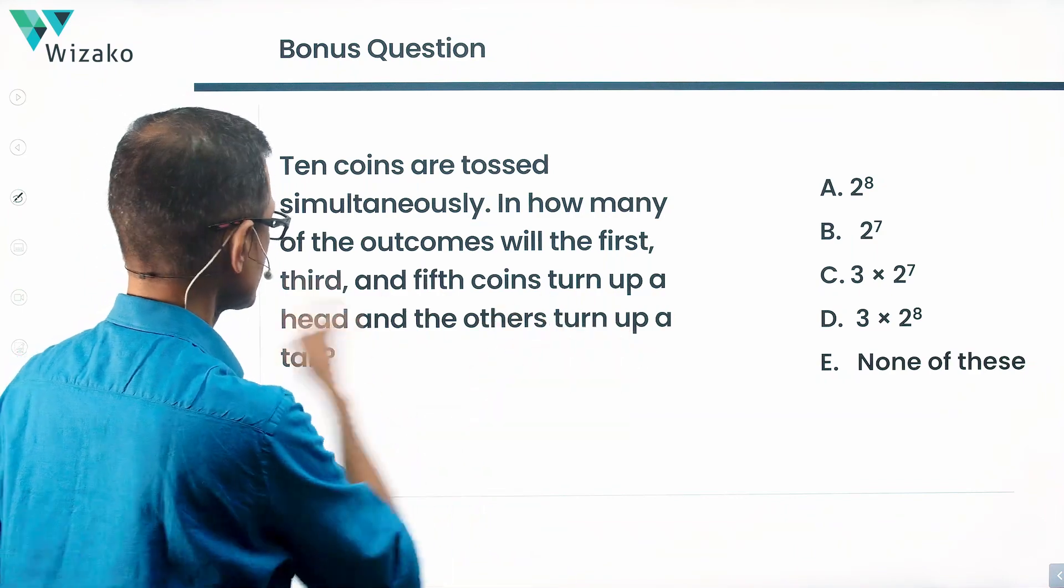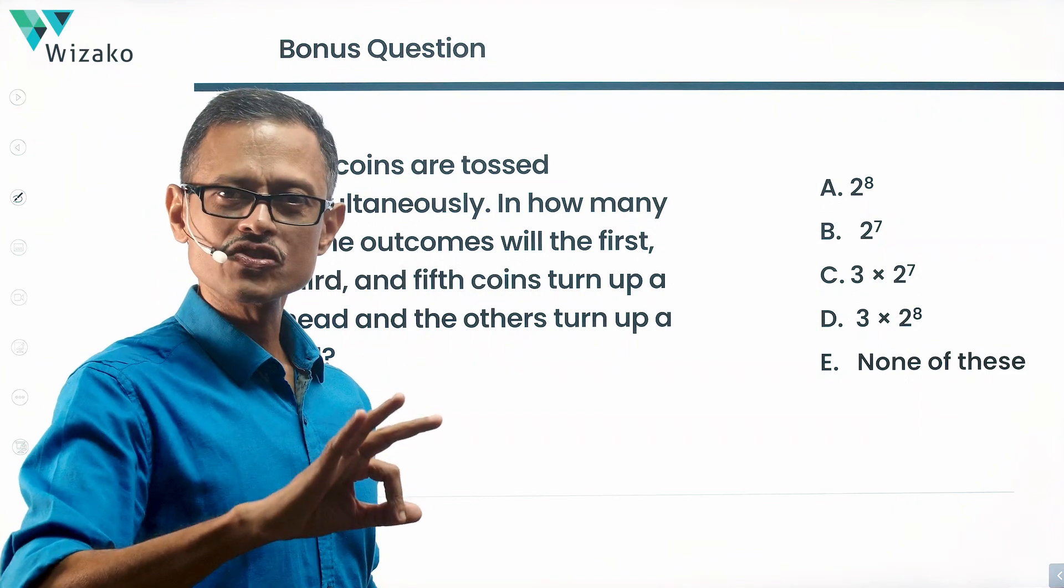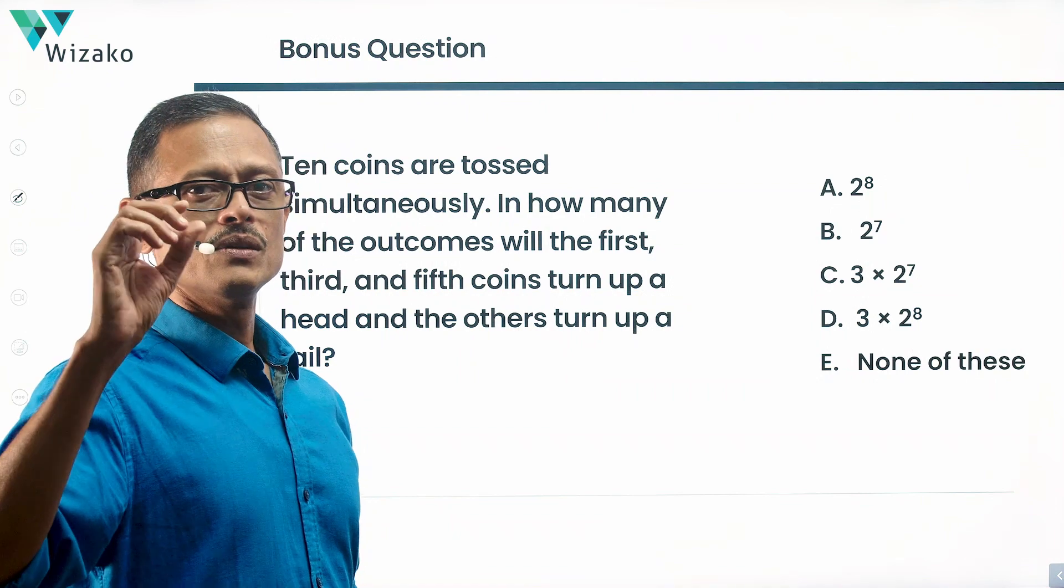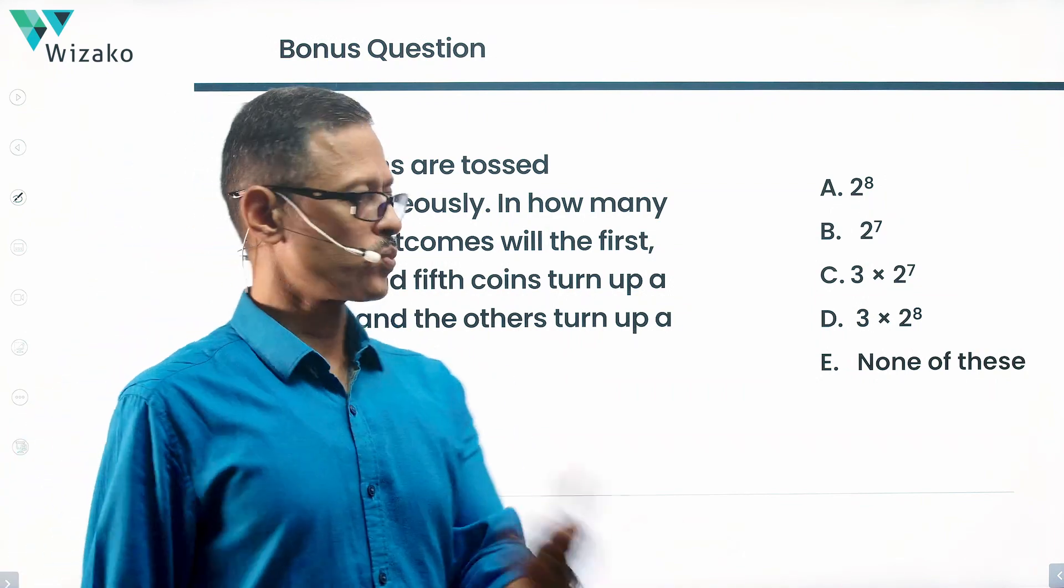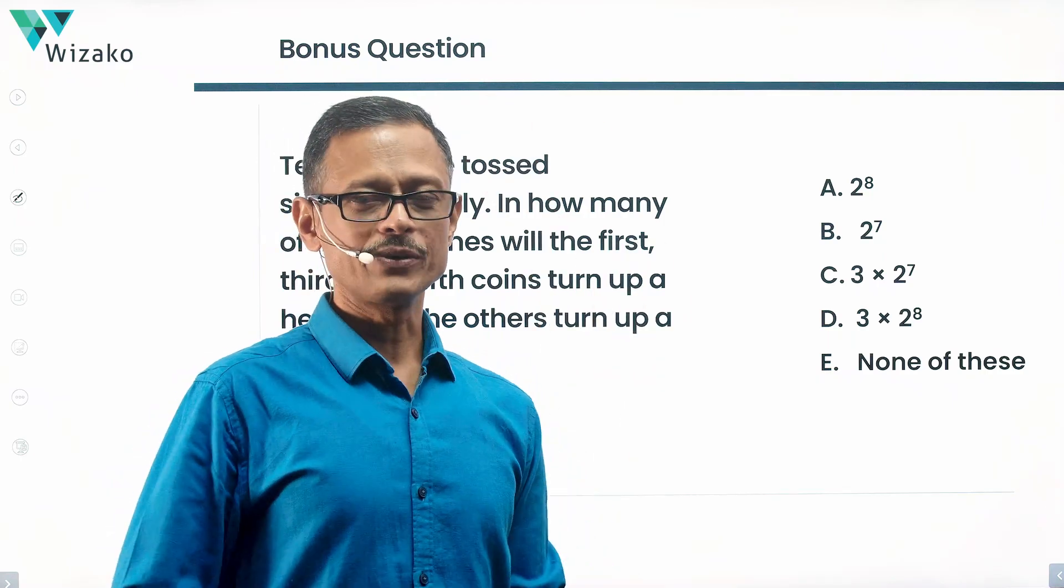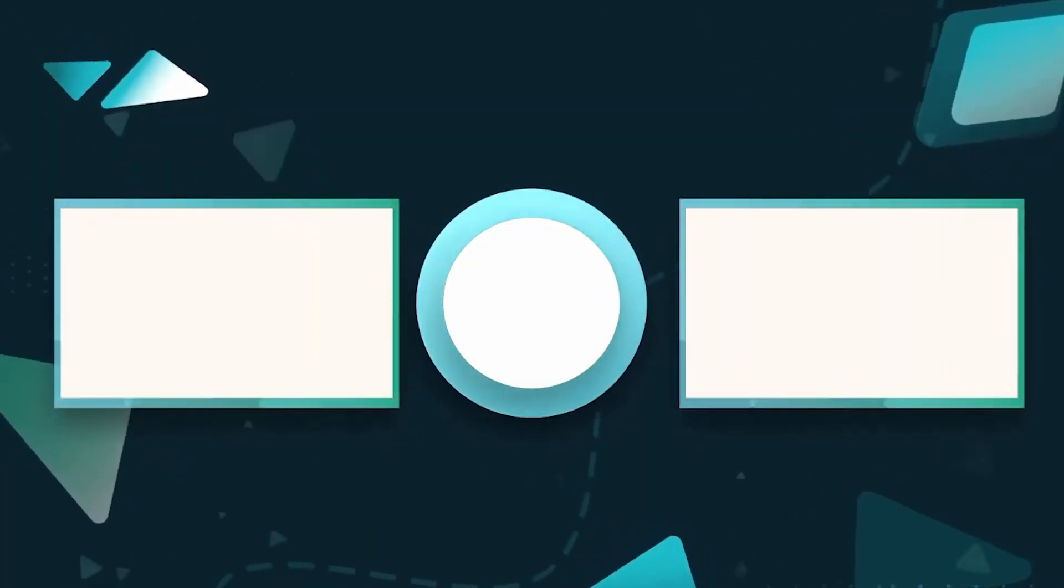And the other coins turn up tails, right? Three coins should be heads: one, three, and five. The remaining should turn up tails. How many outcomes will this happen is what the question is. Give it a shot and post your answers in the comment section of this video. I will see you next time.